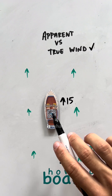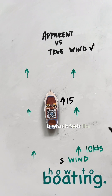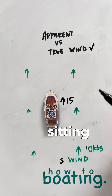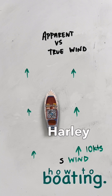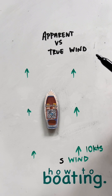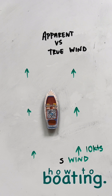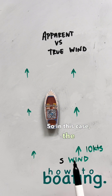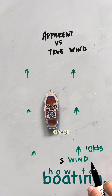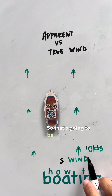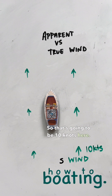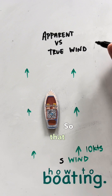What's going on guys, Captain Harley here with How to Boating. We're going to talk about apparent versus true wind. The true wind is the wind speed over the ground — in this case that's going to be 10 knots. That is our true wind.